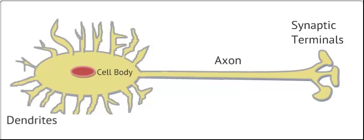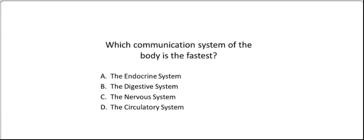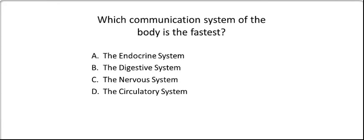Now that we have discussed the nervous system, we can answer a few questions. Which communication system of the body is the fastest? Is that the endocrine system, the digestive system, the nervous system, or the circulatory system?